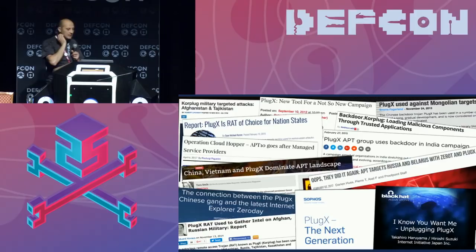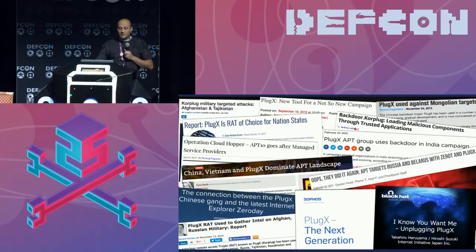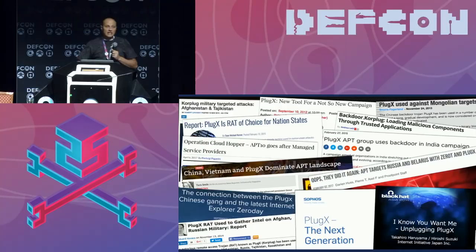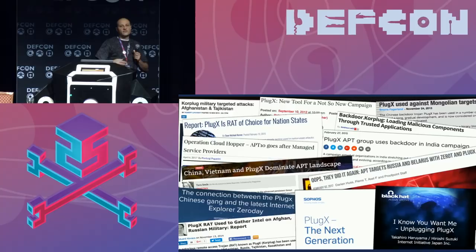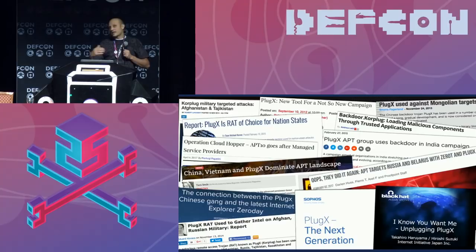PlugX has been cited in a lot of targeted attacks — against Afghanistan, India, Mongolia, Kazakhstan, Japan, Taiwan, Korea, and Tibetan organizations, among others. I could not get the source code for this one, so I relied on dynamic analysis and fuzzing. When I built a fuzzer for the victim-to-C2 protocol, the program would fall over left and right. The number of potential crashes was so high I got overwhelmed and decided to do static analysis instead.